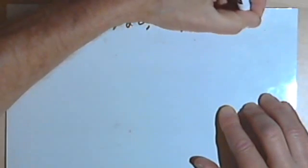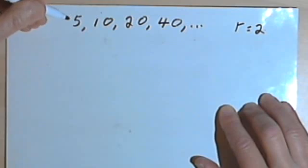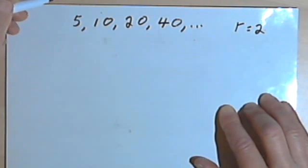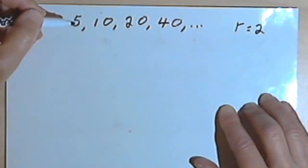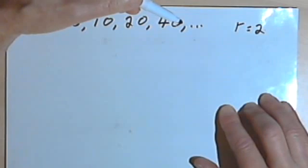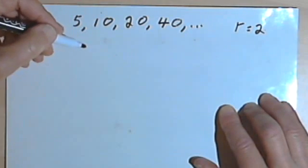So I'm going to write r equals 2 so I can remember the common ratio. And what if somebody asks me what's term number 11? Well, one way I could do this is to keep multiplying by 2 until I find out what the 11th term is. But let's find a general way to do it.